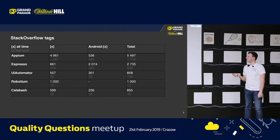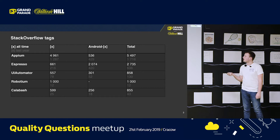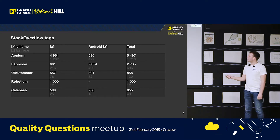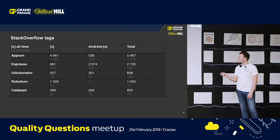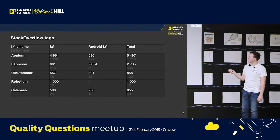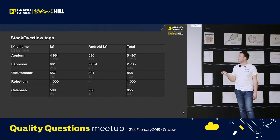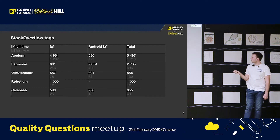Espresso and UI Automator are official frameworks by Google. Appium and Calabash are used for both Android and iOS testing. These numbers represent tag usage on Stack Overflow throughout all time. The first column is the tag representing the framework itself, and the second column is the single tag called Android dash and framework. You can see that Appium is the most popular tool.